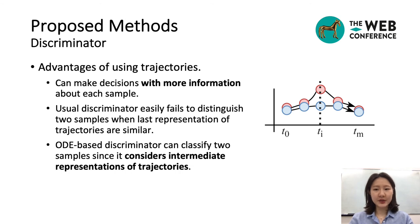When you classify samples using hidden vectors, discriminator is able to make decisions with more information of the samples. Concretely, suppose that two trajectories from t_0 to t_m are all similar except around t_i. Usually, discriminators can hardly classify them since it only considers the last representation, while our trajectory-based classification can correctly classify them by considering the trajectory at t_i.